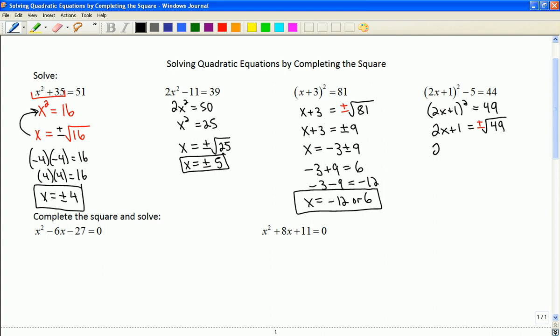So here I have 2x will be equal to negative 1 plus or minus 7. And x is negative 1 plus or minus 7 over 2. So if I wanted to then simplify this a little bit, negative 1 plus 7, that's going to be 6.